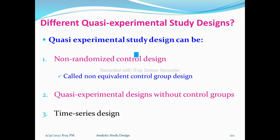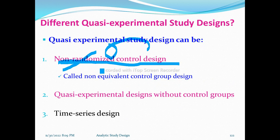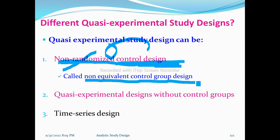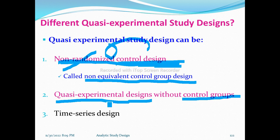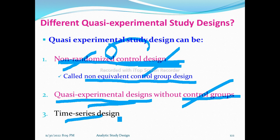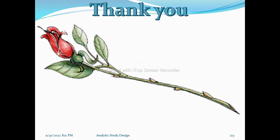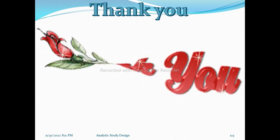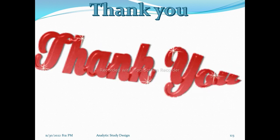There is a problem with experimental design when a randomized control group is lacking — we don't have to have a control group in quasi-experimental designs. The best approach in such cases is to use the time series design.